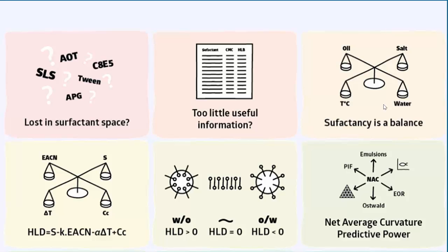So if HLB is wrong, what's correct? The answer is HLD — hydrophilic-lipophilic difference. This simple formula tells you that HLD equals salinity minus the oiliness (EACN), minus a temperature-dependent effect on the difference from 25 degrees, and on the characteristic value of a given surfactant. So you know the surfactant CC, you know your difference in temperature, you know your oil, and you know your salinity, so you can calculate the HLD.